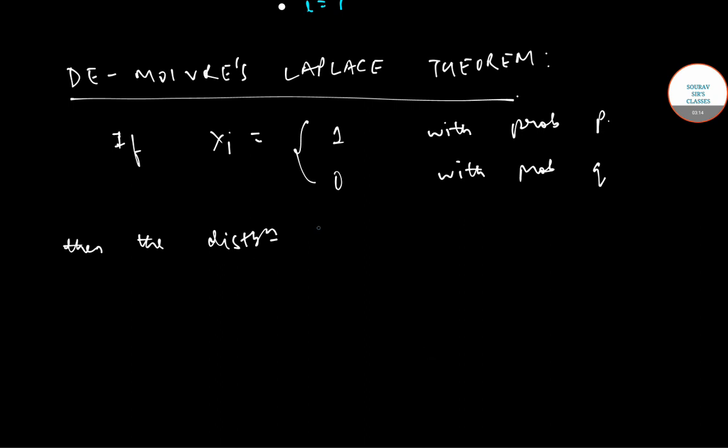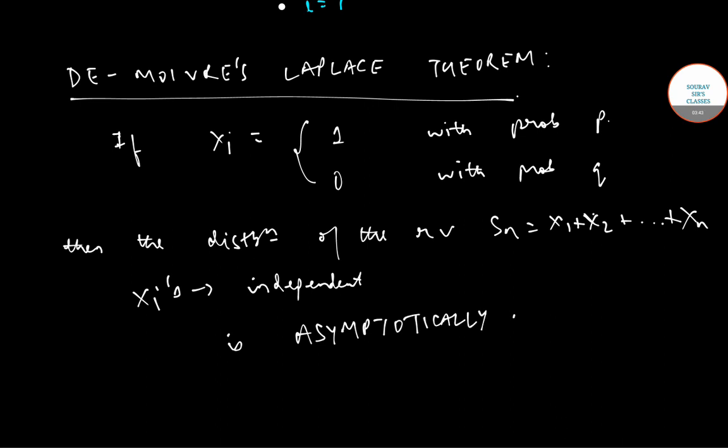then the distribution of the random variable Sn equals x1 plus x2 and so on up to xn, where xi's are independent, is asymptotically normal as n tends to infinity.